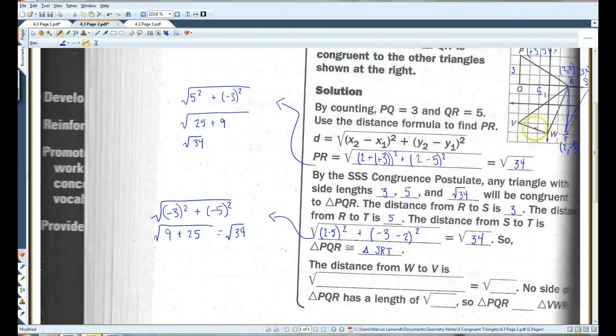The distance from W to V, that's these two. This is negative 3, negative 2. And this point is 0, negative 3. So, you're going to have negative 3 minus 0 squared plus negative 2 minus negative 3 squared. These become positive.